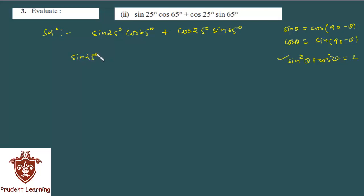So this sin 25 degree as such, cos 65 can be written as cos(90 - 25) because we know that 90 minus 25 is 65. Plus of cos 25 as such, and sin 65 can be written as sin(90 - 25).